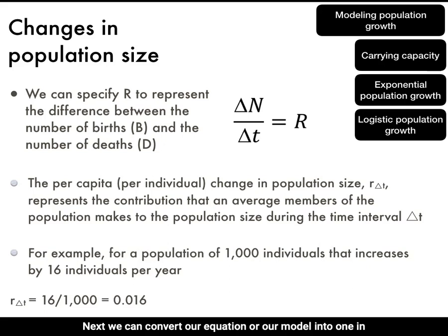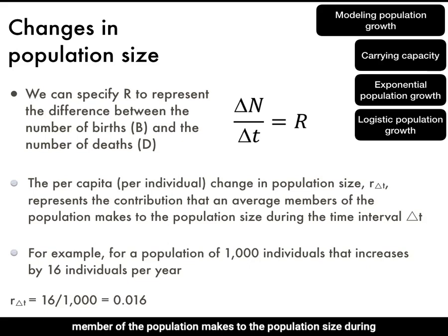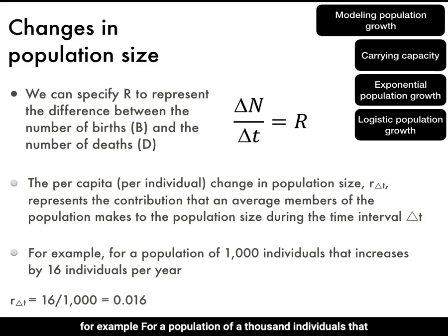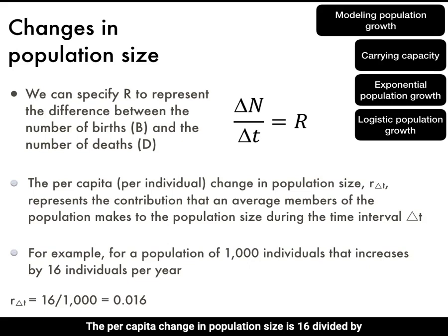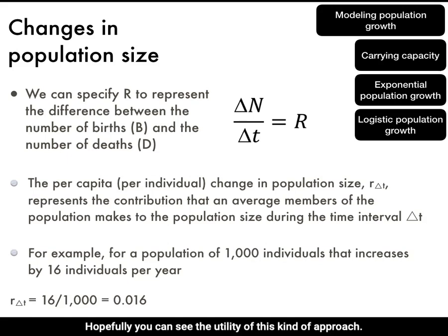We can convert our model into one in which changes in population size are expressed on a per-individual or per-capita basis. The per-capita change in population size r_Δt represents the contribution that an average member of the population makes during the time interval Δt. For example, for a population of 1,000 individuals that increases by 16 individuals per year, the per-capita change is 16 divided by 1,000, which is 0.016 — meaning on average each individual contributes 0.016 offspring per year.